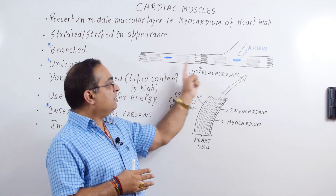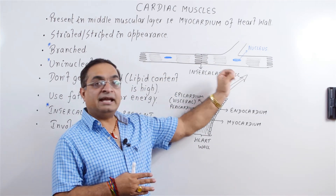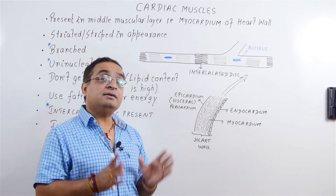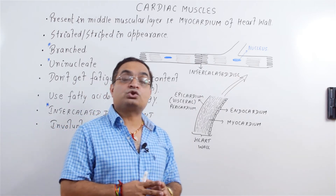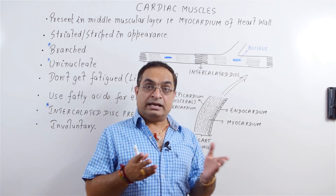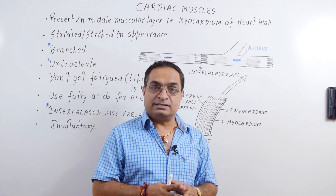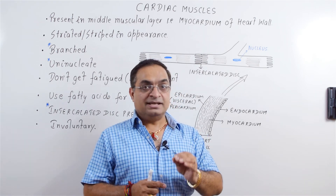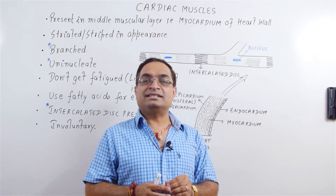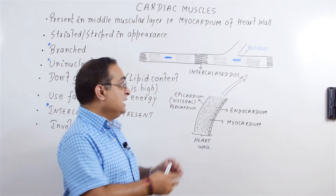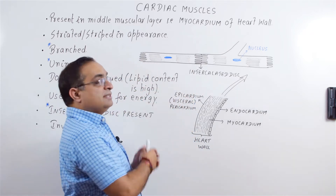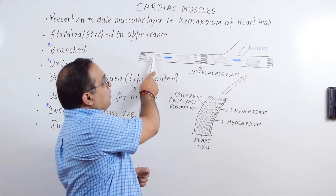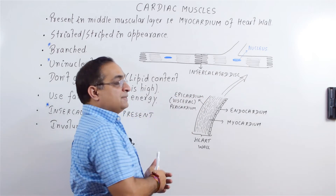This diagram is of cardiac muscles. Now, cardiac muscles are striated like skeletal muscles. When we say striated, that means these show alternate light and dark bands, as you can see in this diagram — it shows the alternate light and dark bands.